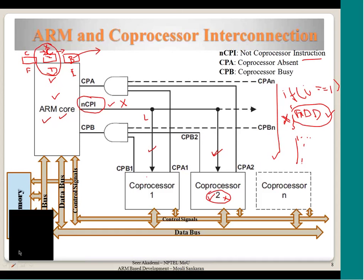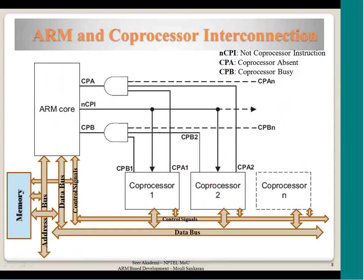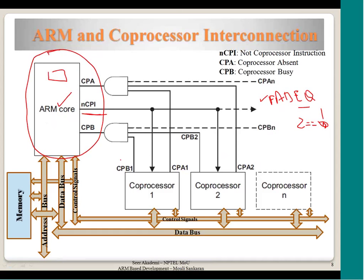ARM core decides when whether to execute a particular instruction or not, including the floating point instruction. That is why the main control processor is ARM - coprocessors will do the job that ARM expects them to do. They know how to do the job but ARM controls what the coprocessor should do and when they should do it. That is controlled by the NCPI signal.